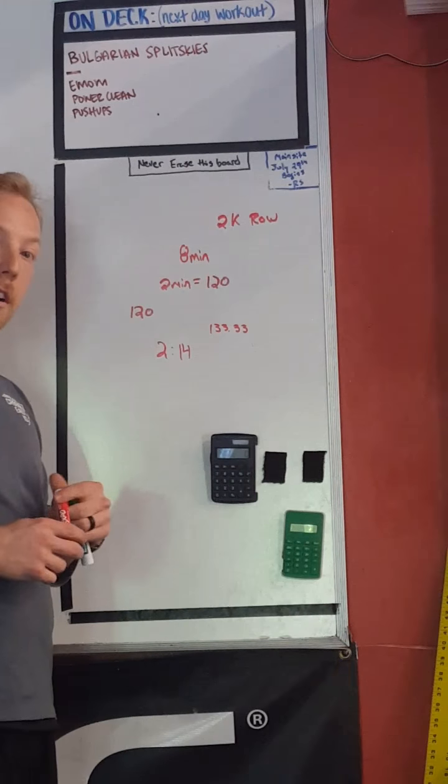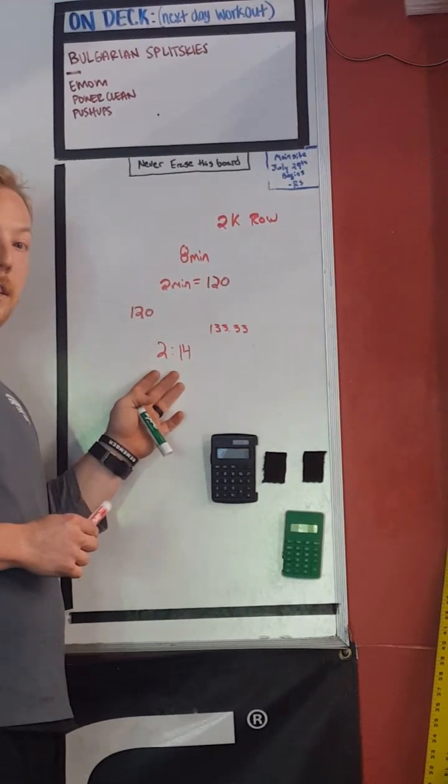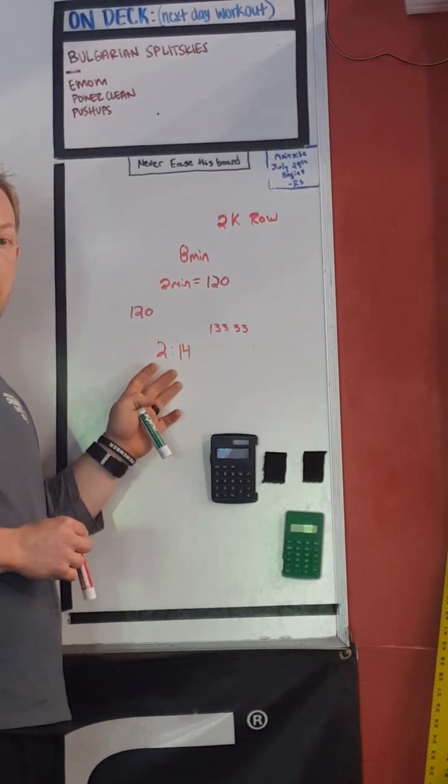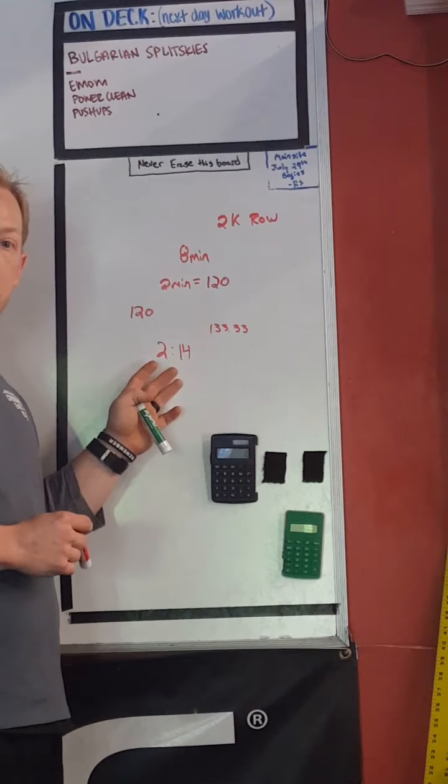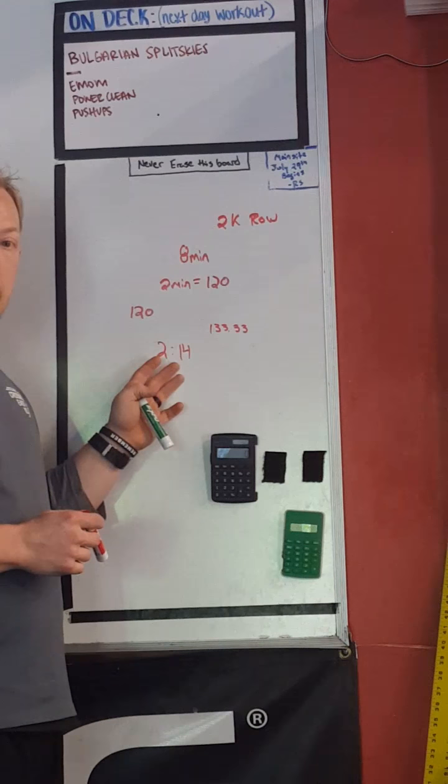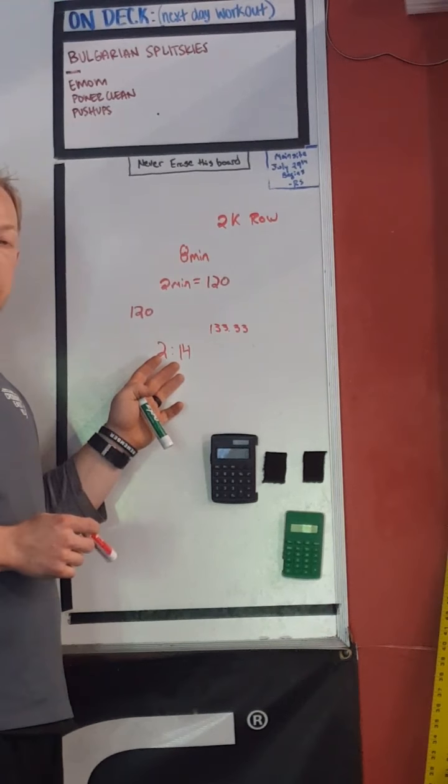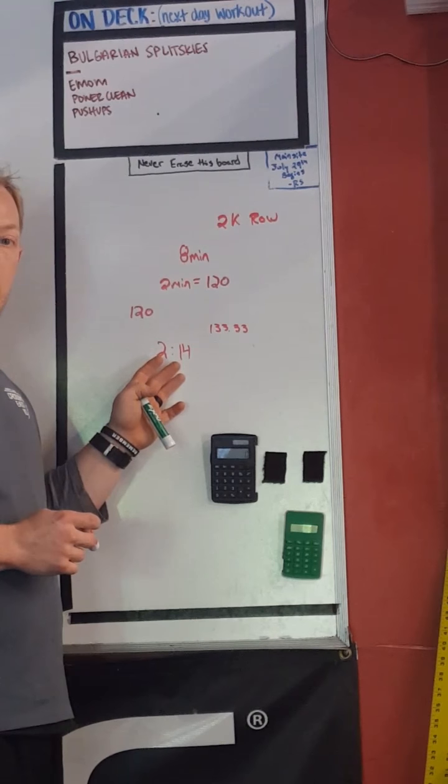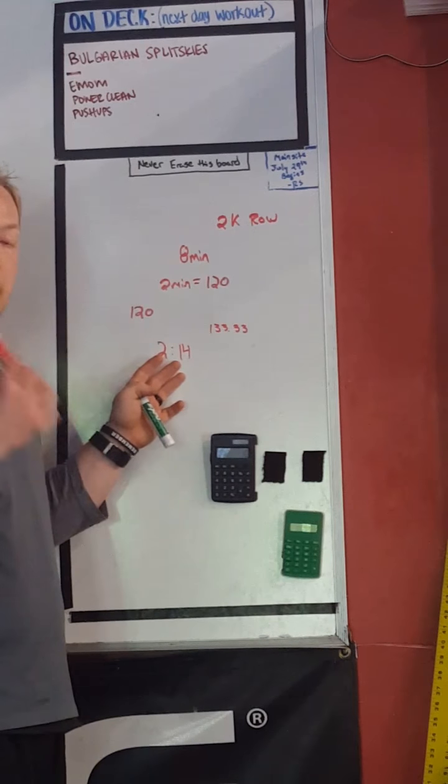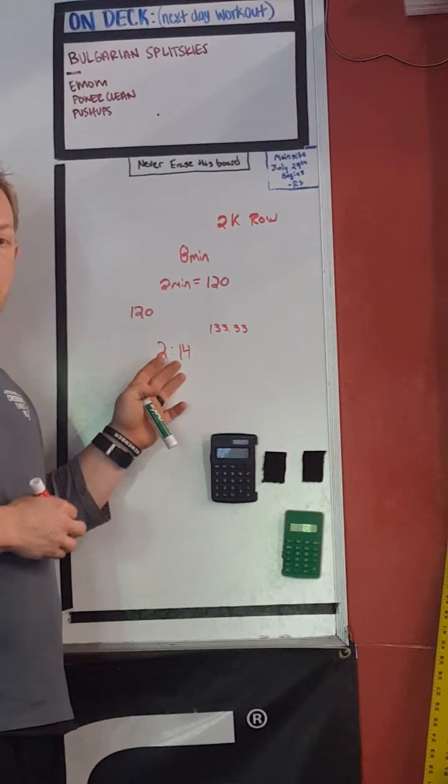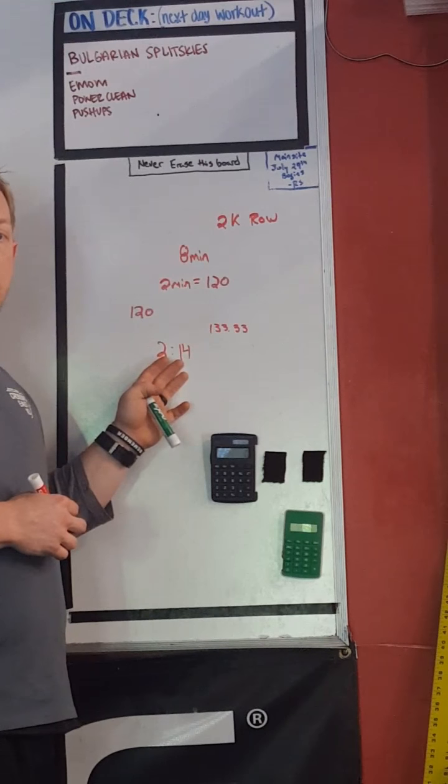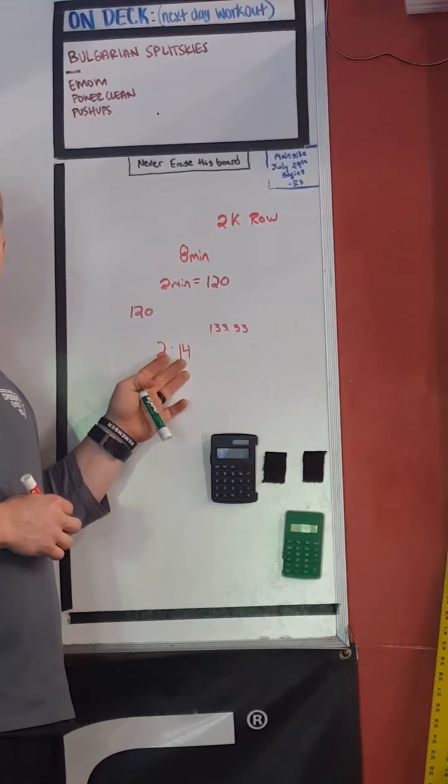If you go for a year and work at 90 to 95 percent, guess what your 2K is going to do? You're going to PR your 2K. If you know what 90 percent of your 2K feels like, you'll know what that feels like when a workout says 70 or 90 percent effort. That's why it's important.